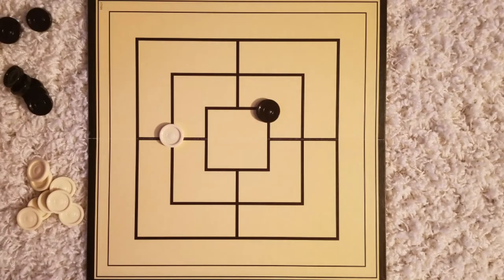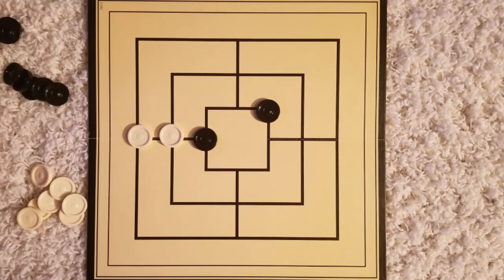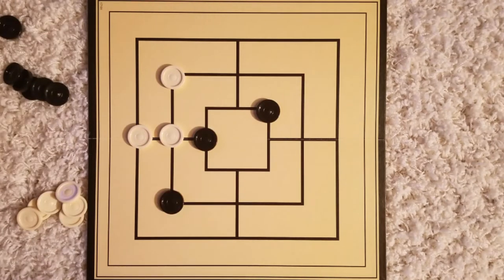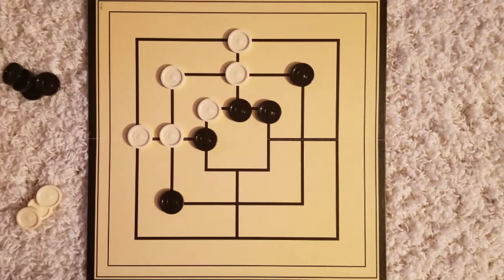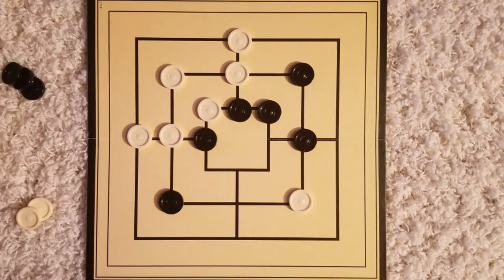The first is the placement of the pieces. Players take turns placing one piece at a time on the board at either an intersection or at a corner until they have used all their pieces up.